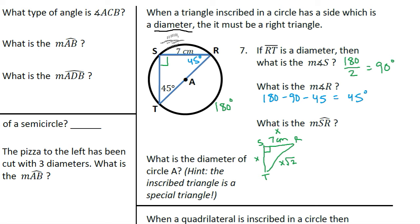If we look at arc SR, that is the arc that's cut out of the circle from inscribed angle STR. This is the intercepted arc of angle STR.